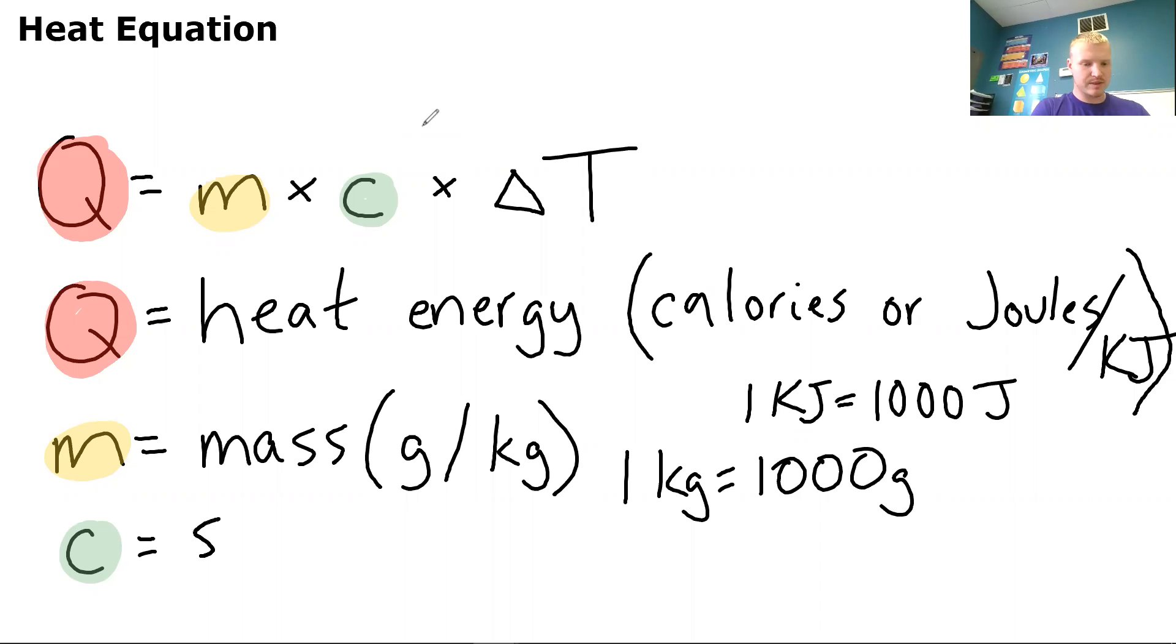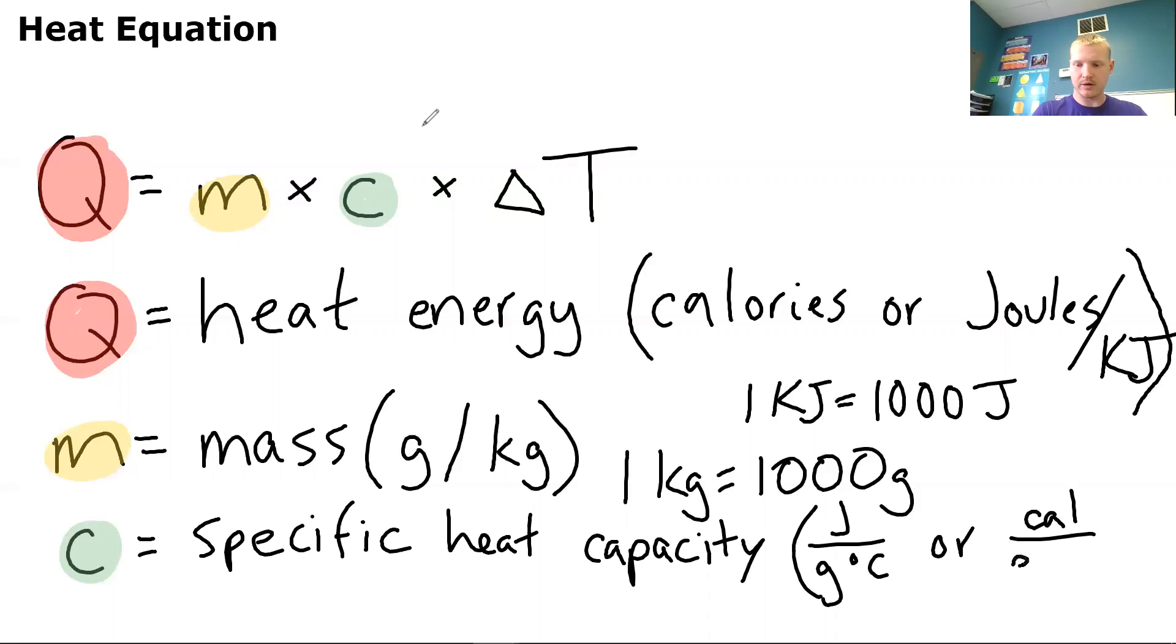So specific heat capacity. And the units for that will be joules per gram degree Celsius, or calories per gram degree Celsius. And you'll see that in your book at the top of page 272. For the specific heat capacity, you have both grams or calories per gram degree Celsius, and you have joules per gram degree Celsius at the top.